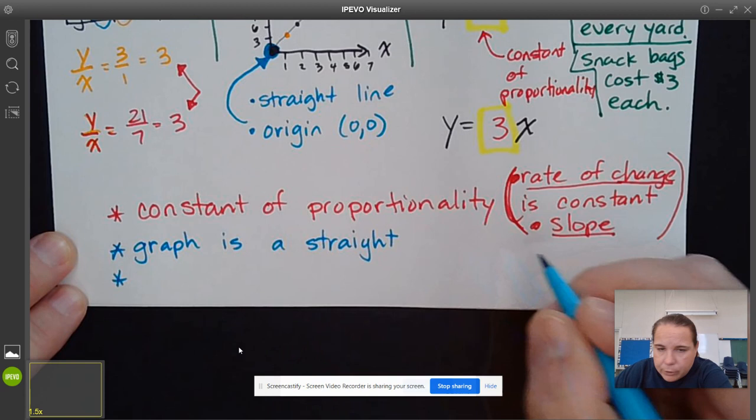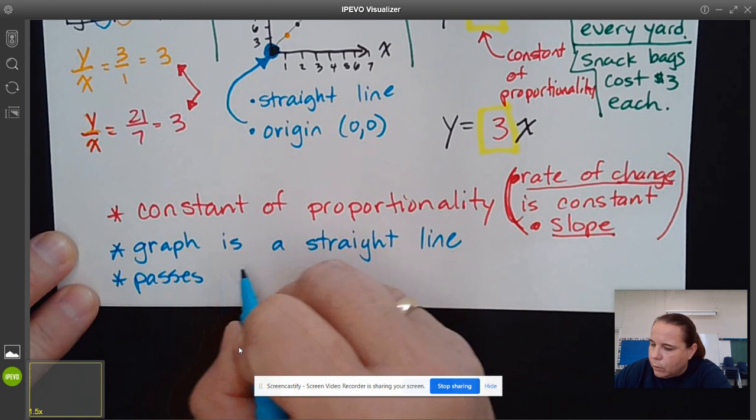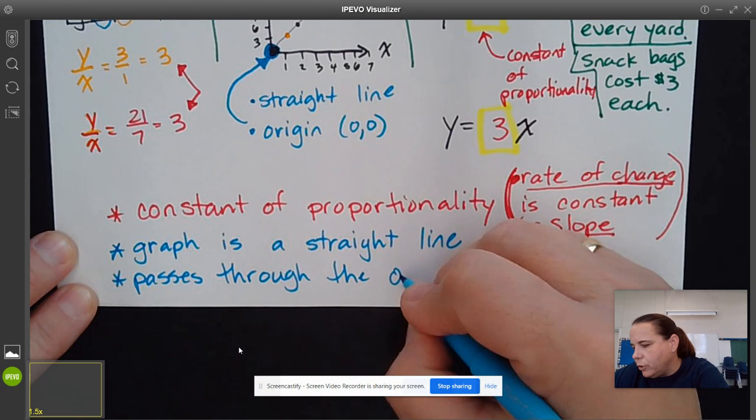It can be diagonal, but it is a straight line. And it passes through the origin, which is 0, 0 on a graph. So these are some of those basic concepts.